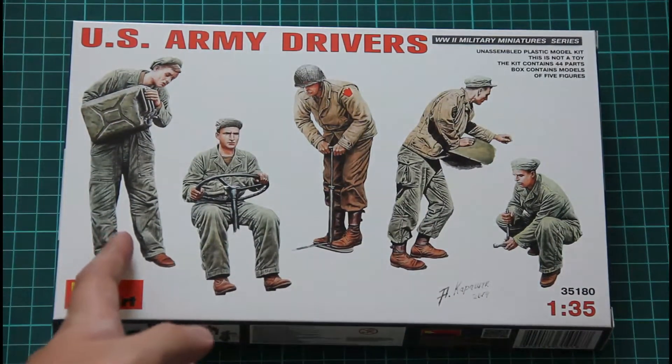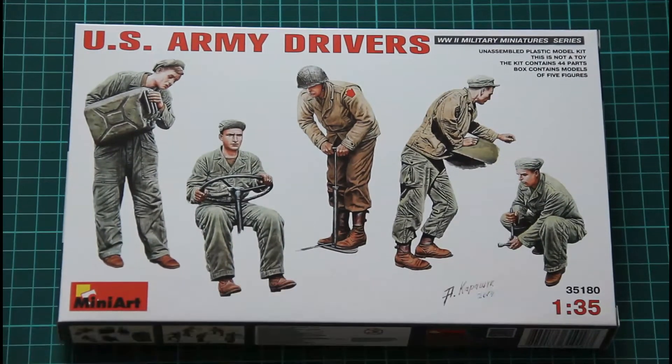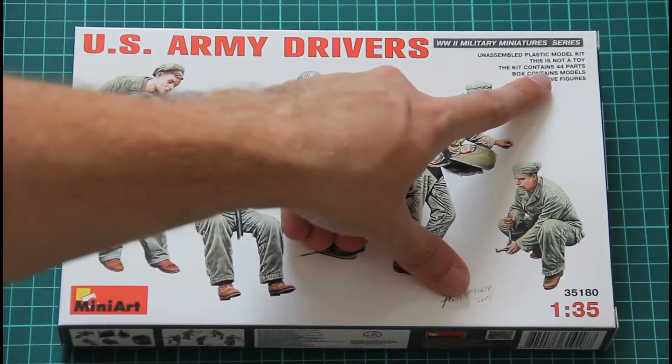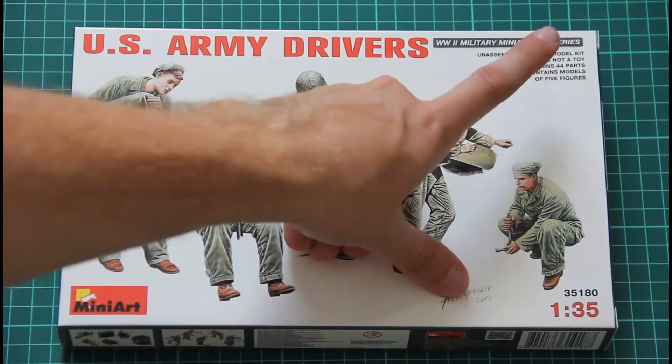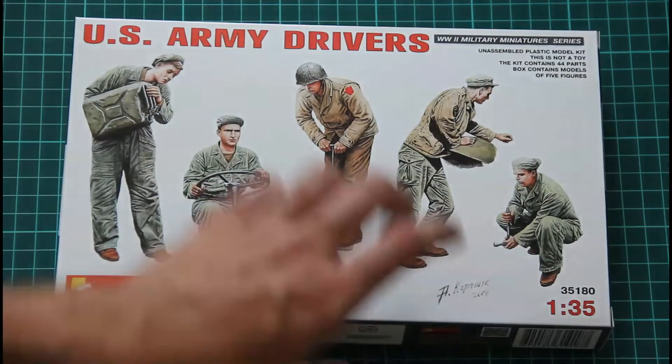Here we have nice box art which was drawn. Here you can see the signature of the painter. So it's written here also that the kit contains 44 parts which are enough to build, to assemble 5 figurines in different poses as you can see.